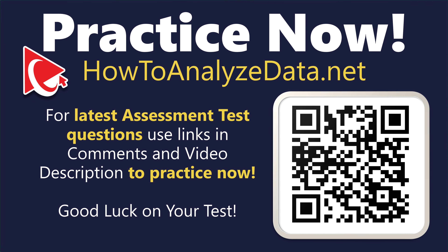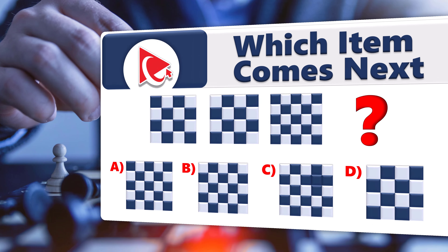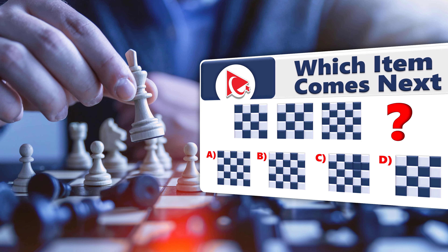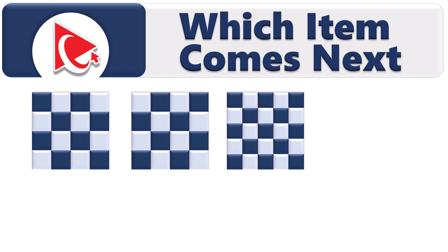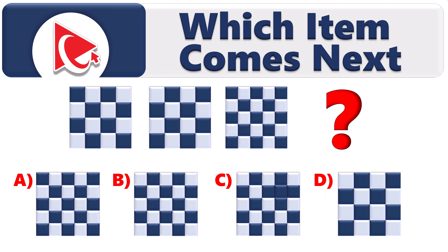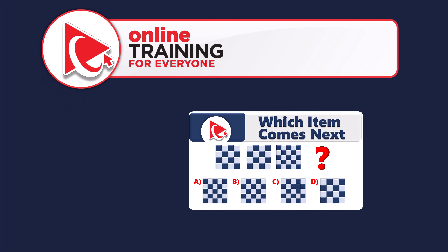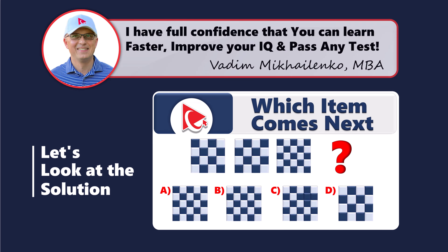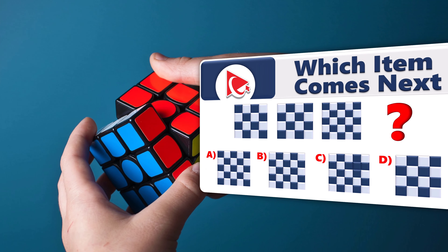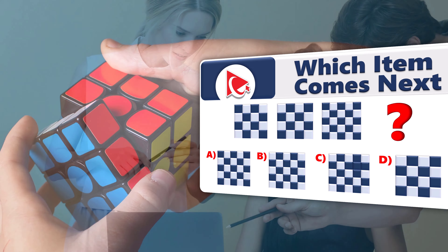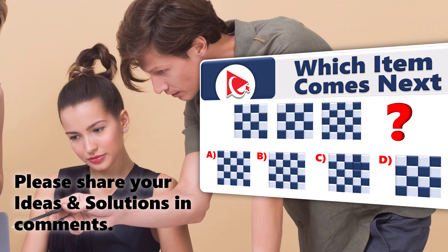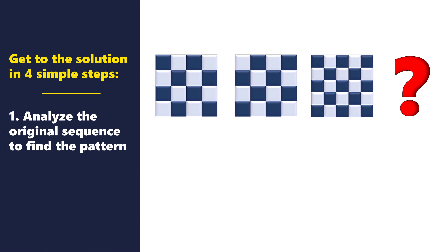Let's dive into an amazing cognitive assessment test question that enhances your analytical abilities and improves your problem-solving skills applicable to real-life problems. You're presented with three squares, and you need to determine which square comes next — to be selected out of four possible choices: A, B, C, and D. Take a close look to see if you can come up with the solution. Our goal is to get to the solution in four simple steps. In step one, we need to analyze the original sequence of squares to find the pattern.